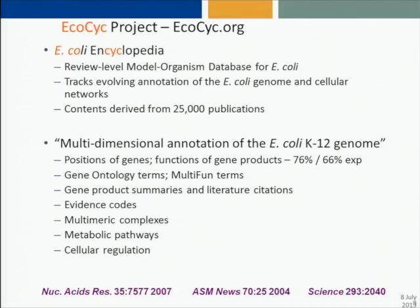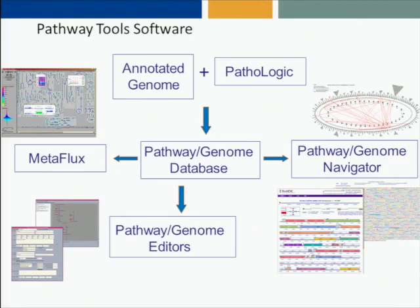EcoCyc describes not only the positions and functions of genes, but our curators offer many review summaries about E. coli genes and pathways. It also describes multimeric complexes of E. coli, E. coli metabolic pathways, and many types of E. coli regulation — from transcription factor-based regulation to attenuation to small RNA regulation. The majority of the other databases in the BioPsych collection of 3,000 databases have not undergone that level of manual curation, since it takes huge resources to do that.